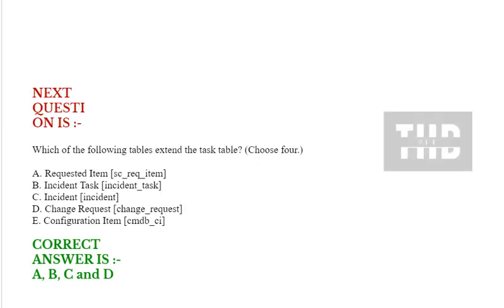Next question: Which of the following tables extend the task table? Option A: Requested Item (sc_req_item). Option B: Incident Task (incident_task). Option C: Incident (incident). Option D: Change Request (change_request). Option E: Configuration Item (cmdb_ci). Correct answer is Option A, B, C, and D.